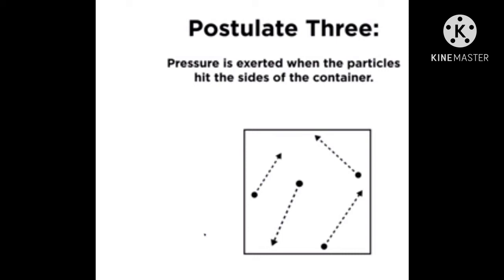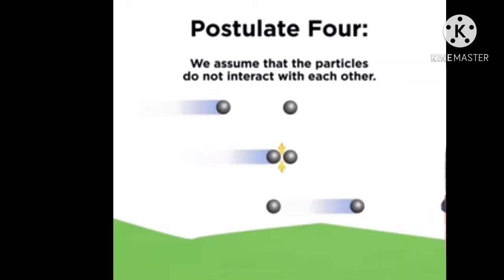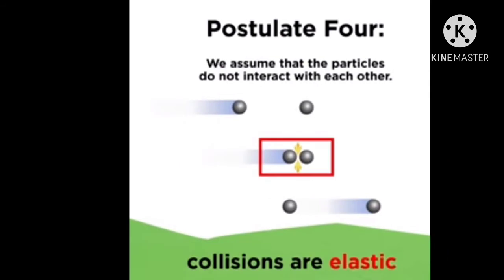The pressure is exerted when the particles hit the sides of the container. The molecules are small but occupy space. Postulate four: we assume that the particles do not interact with each other, and the collisions are elastic.